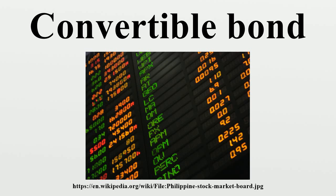At maturity, the holder would either convert into shares or request the redemption at par, depending on whether or not the stock price is above the conversion price. Mandatory convertibles are a common variation of the vanilla subtype, especially on the U.S. market. Mandatory convertibles would force the holder to convert into shares at maturity, hence the term mandatory. Those securities would very often bear two conversion prices, making their profiles similar to a risk reversal option strategy.